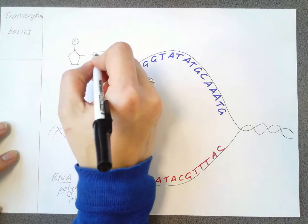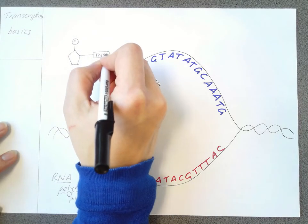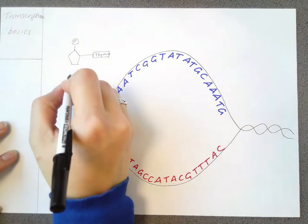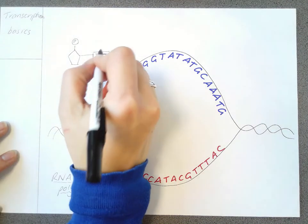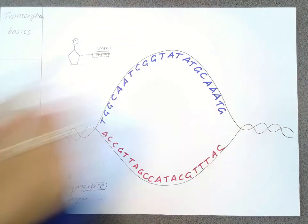So that might be a T for thymine, but in this case we aren't going to build thymine, we are going to build something with something else on it. So we might say that this is a uracil.